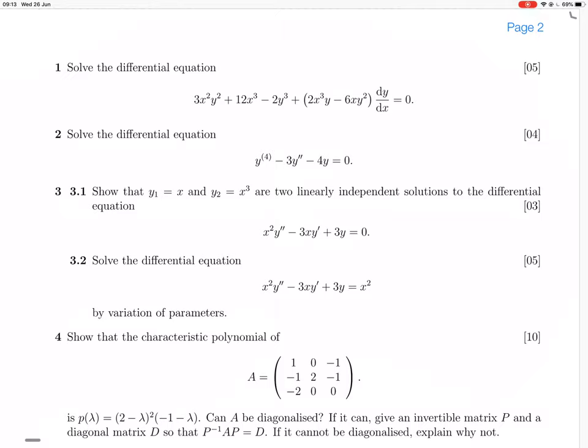So this whole variation of parameters thing is going to involve setting up that matrix, which will give us, solve that matrix equation to give us u dash and v dash, then integrate those in terms of x, and then put them into this equation.